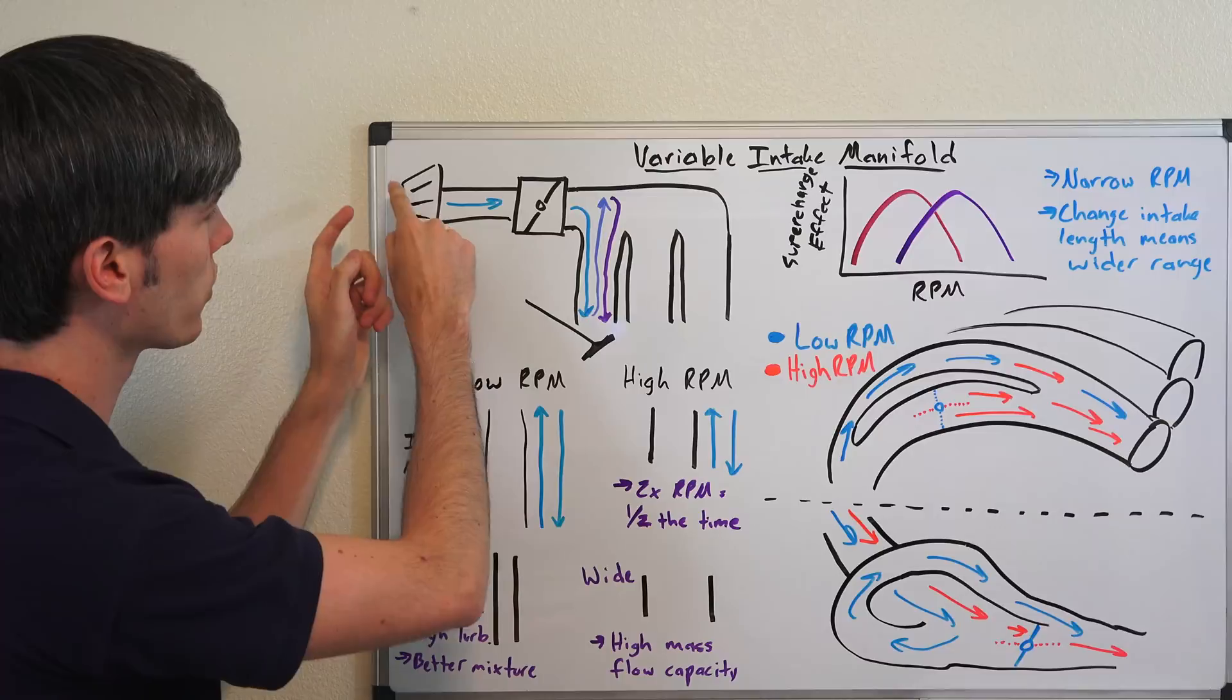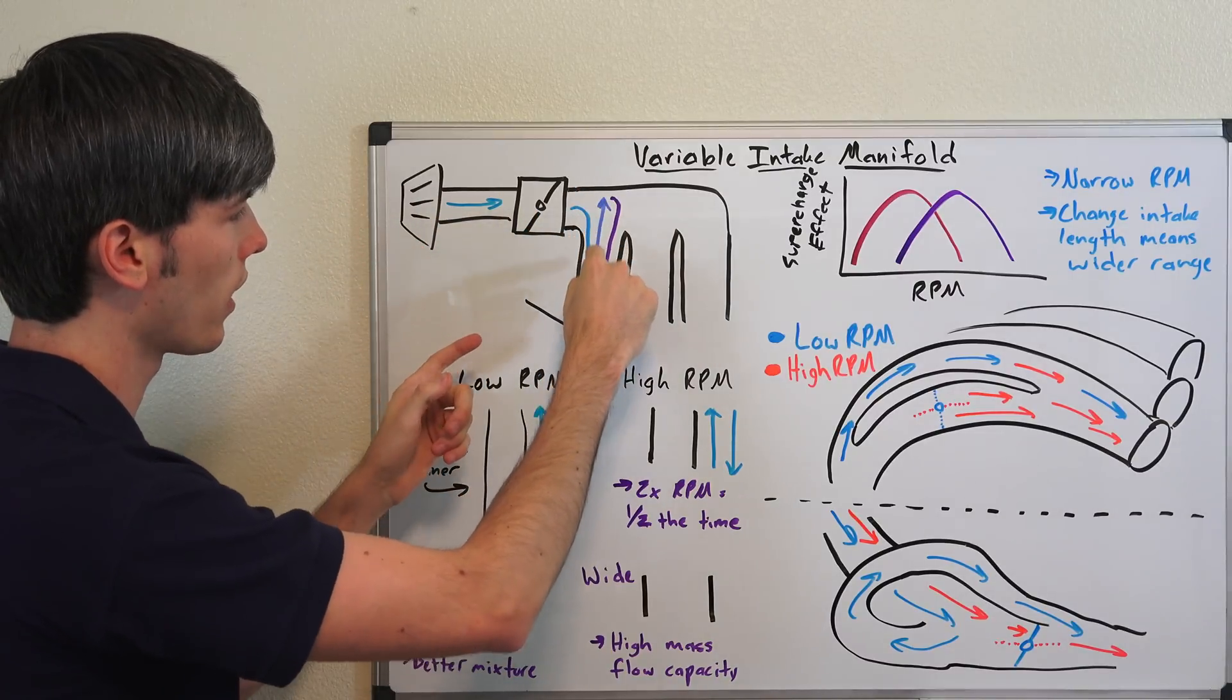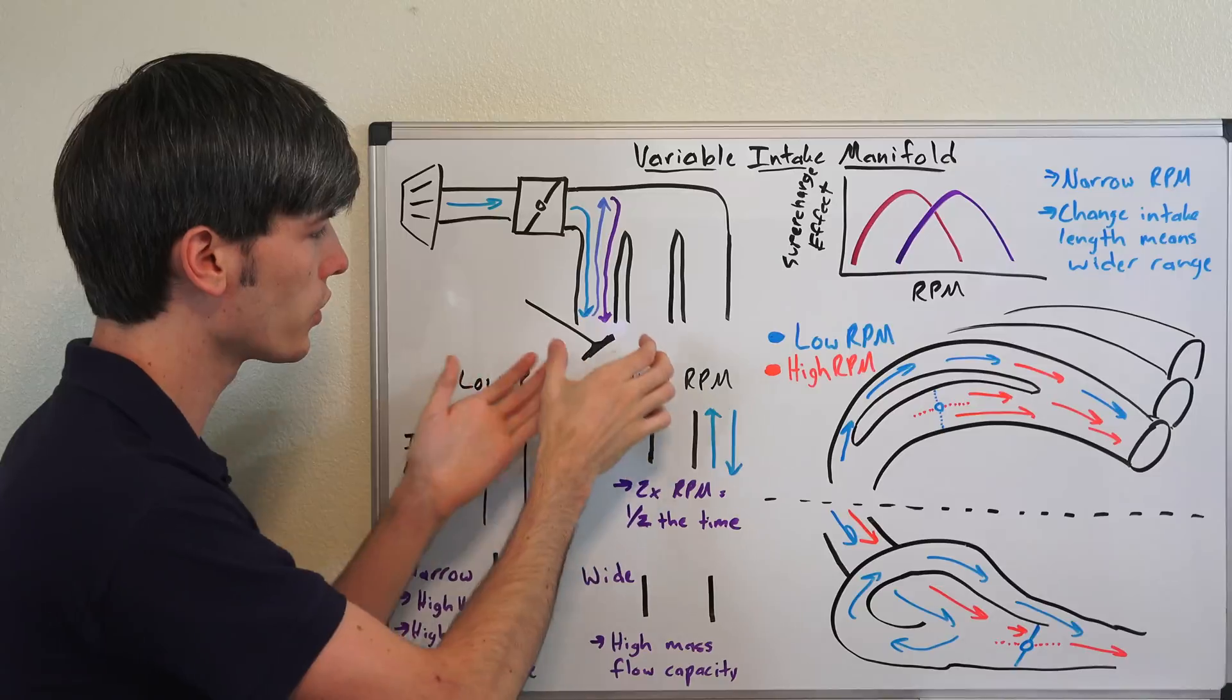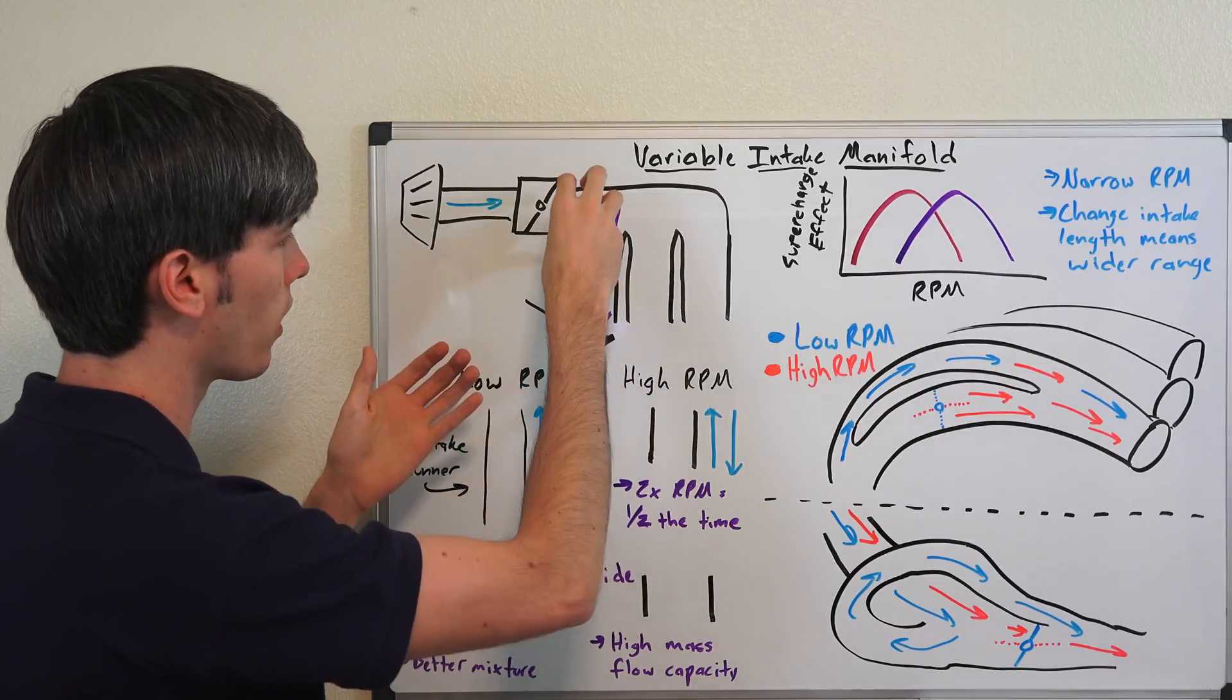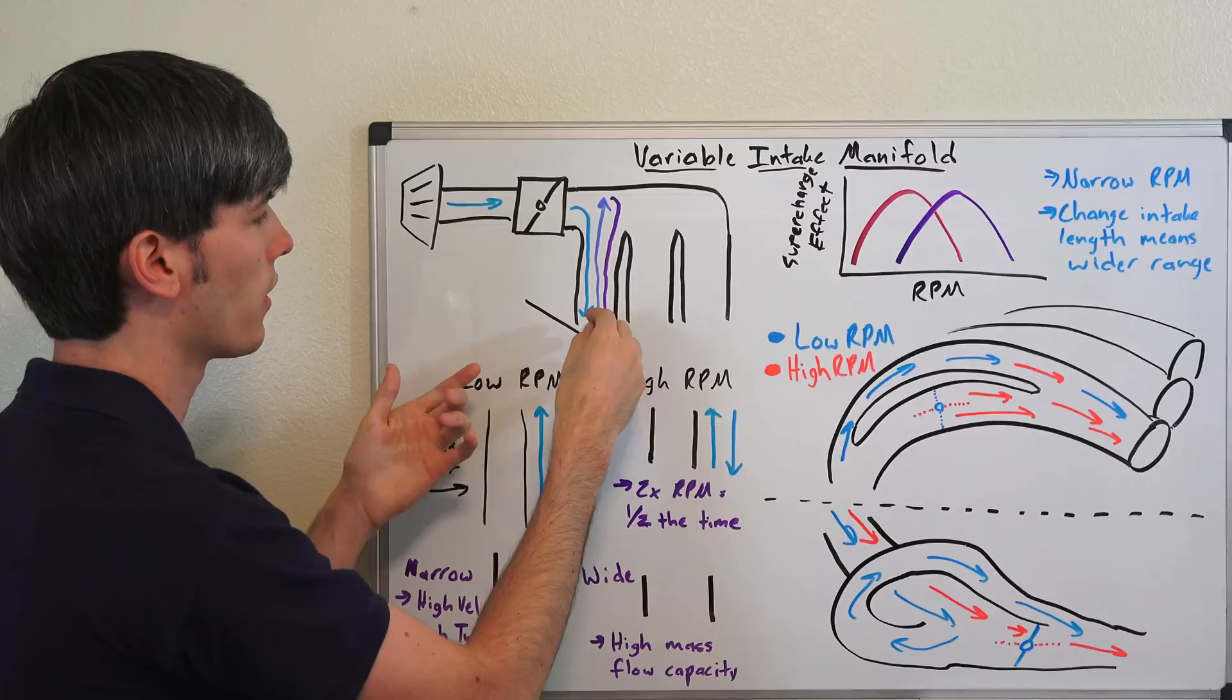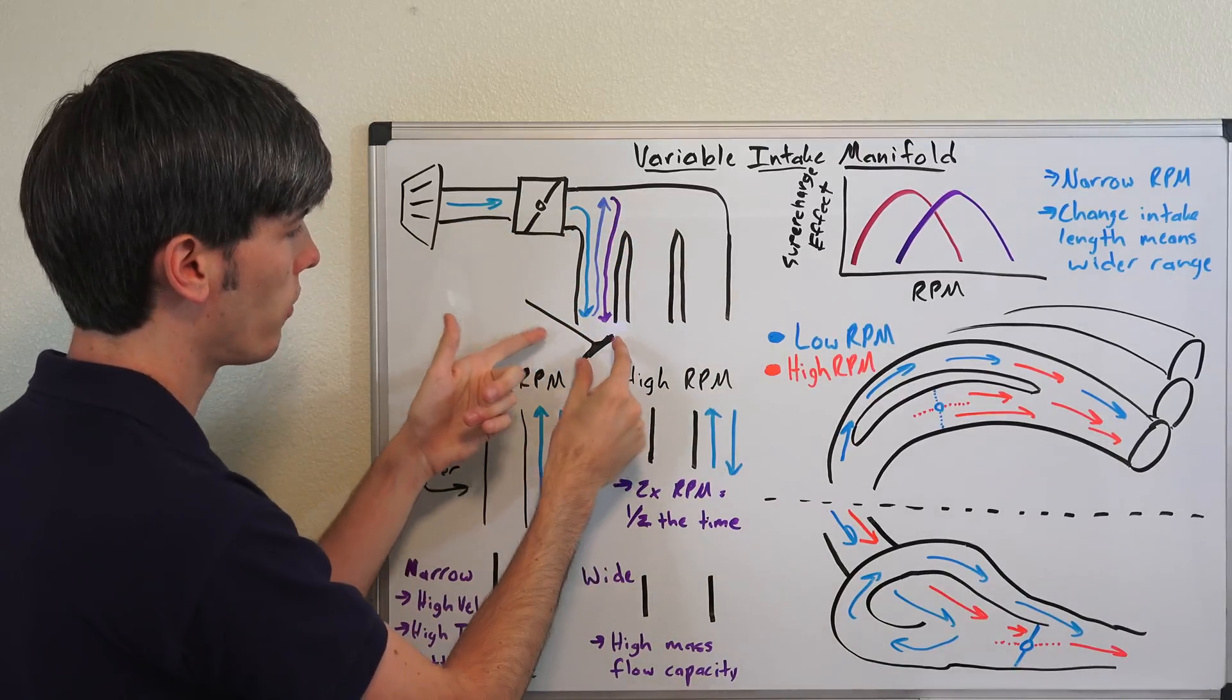You've got your intake here, your air is going to come in, pass through the throttle body, and then start to go down this intake runner right here. Now your engine is on the intake stroke for this cylinder, so it's pulling in that air causing this air to move at a high velocity. Right before that air gets into that cylinder, your valve closes.